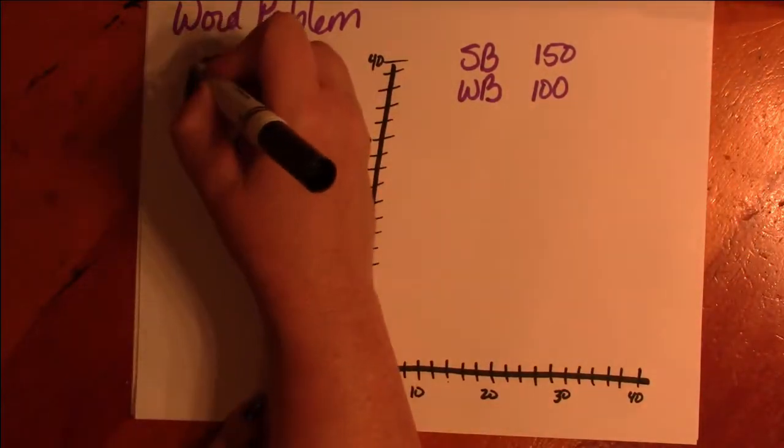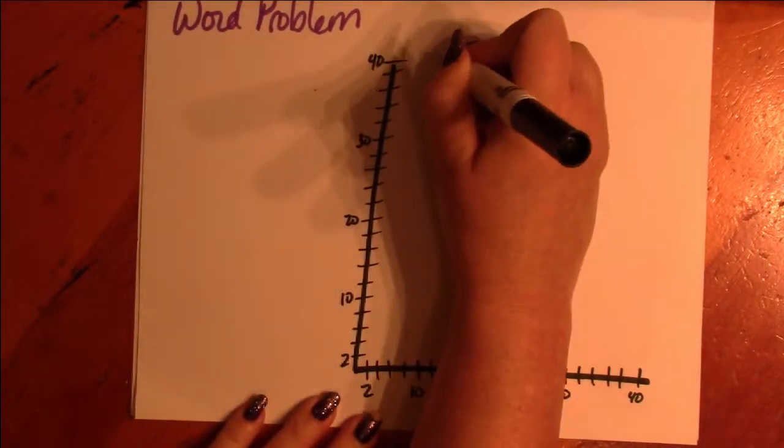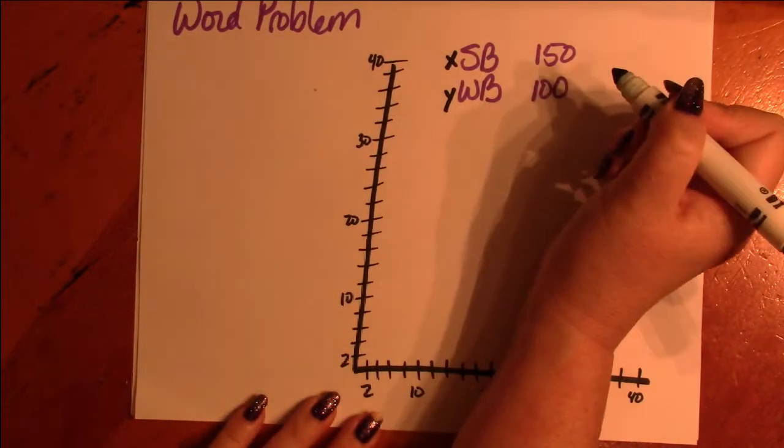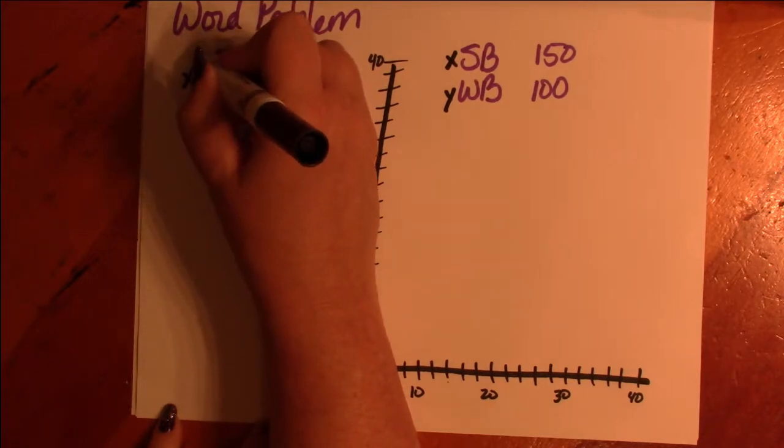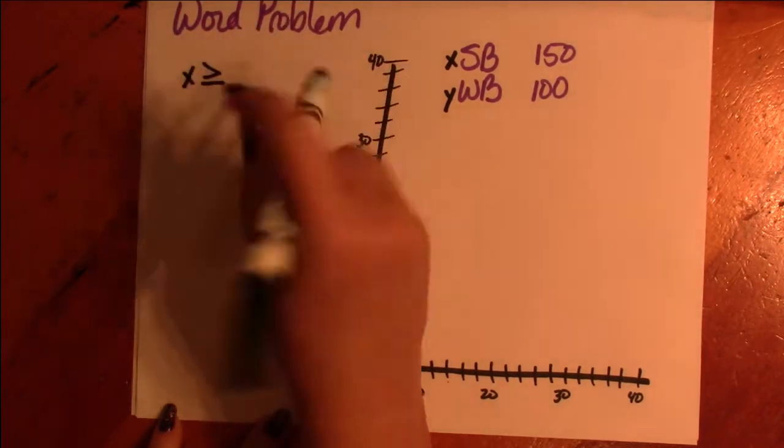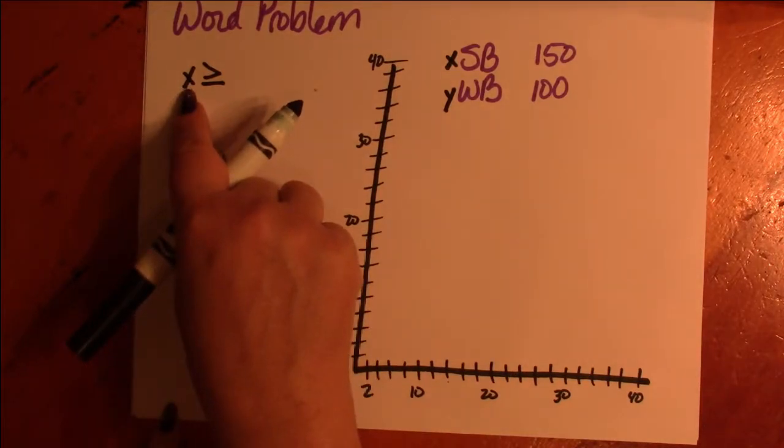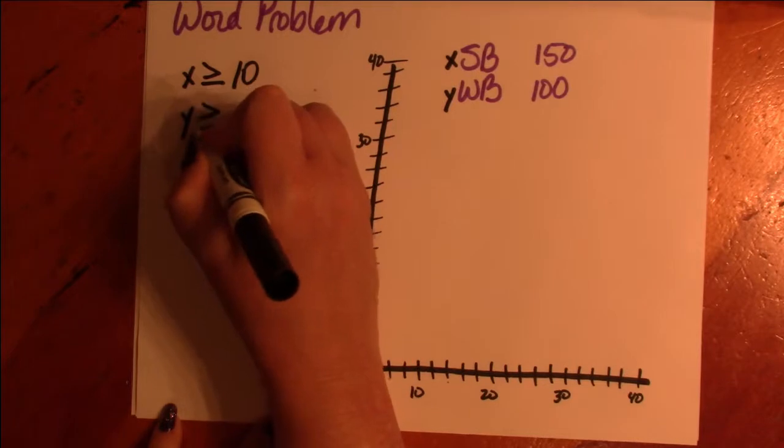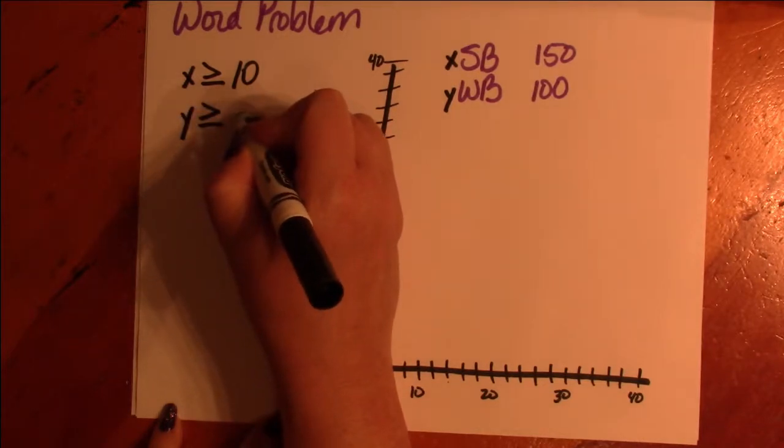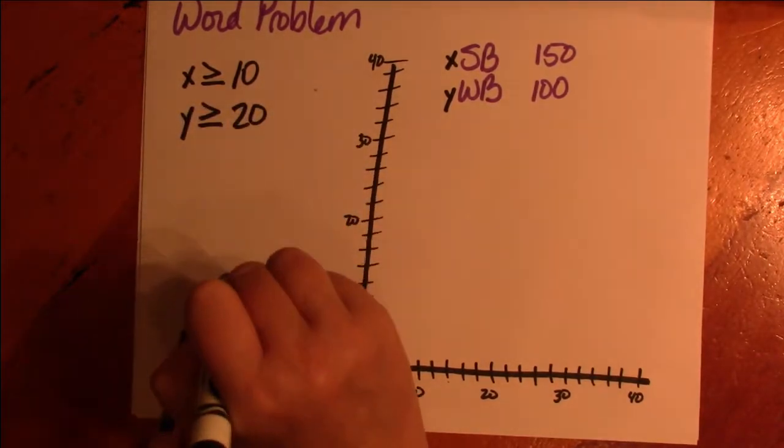He wants to sell at least 10 surfboards and at least 20 wakeboards each month. So, if we're going to make this X and this Y, then he wants X to be at least, if not more, it can equal to or be greater than 10 surfboards each month, and Y can be at least, if not more than, 20 wakeboards a month.